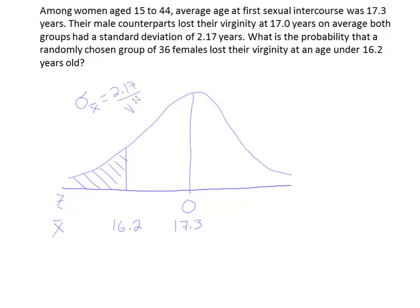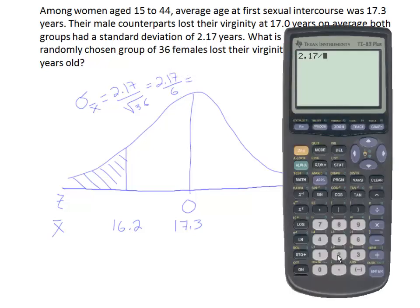Okay, so we're going to divide that by the square root of 36, and of course that's going to be 2.17 over 6. All right, this can be worked out into a decimal, and let's go ahead and do that quickly. It'll be 2.17 divided by 6, and we get 0.3616 repeating.